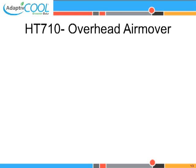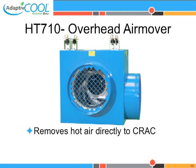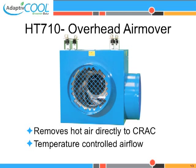Mixing of cold air and hot air is the primary cause of cooling inefficiency. Removing hot air from the hot aisle directly to the cracks eliminates this problem. HT710 is a ceiling mounted, temperature controlled air mover designed just for this purpose. HT710 can also be networked into a demand-based cooling system.